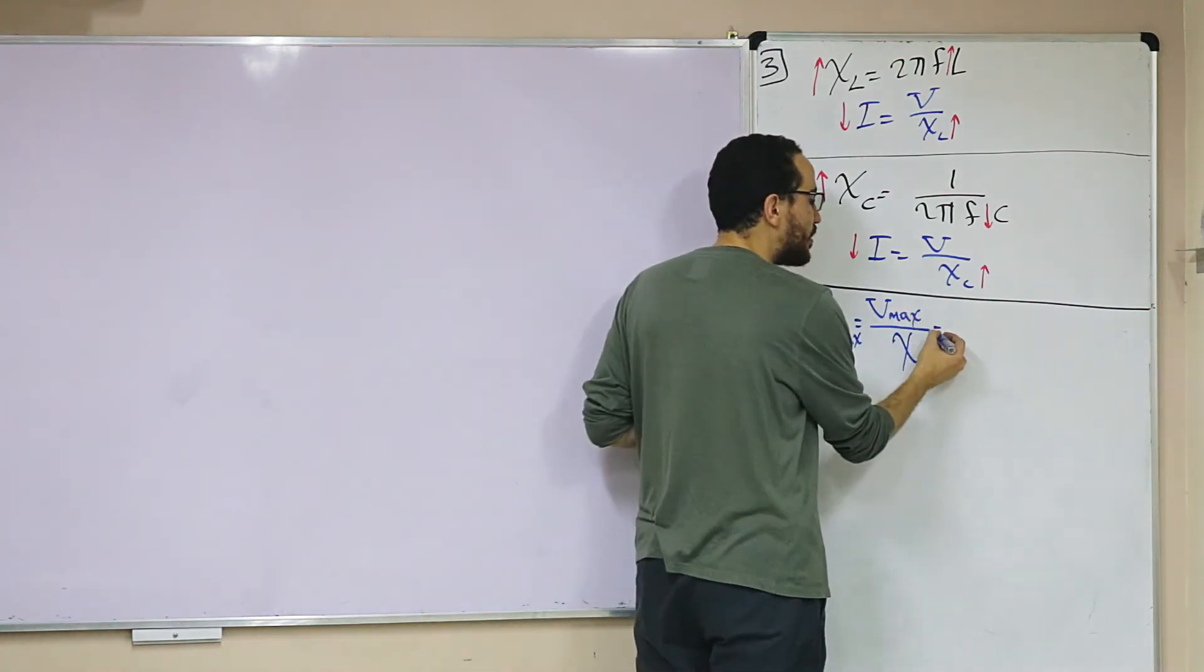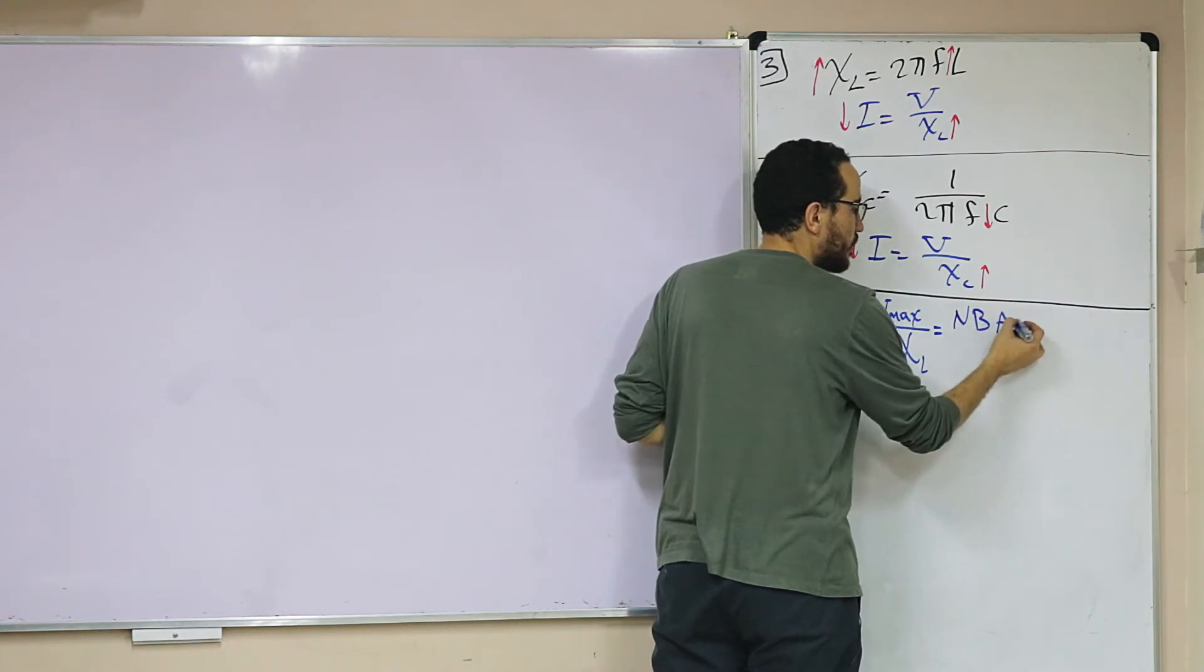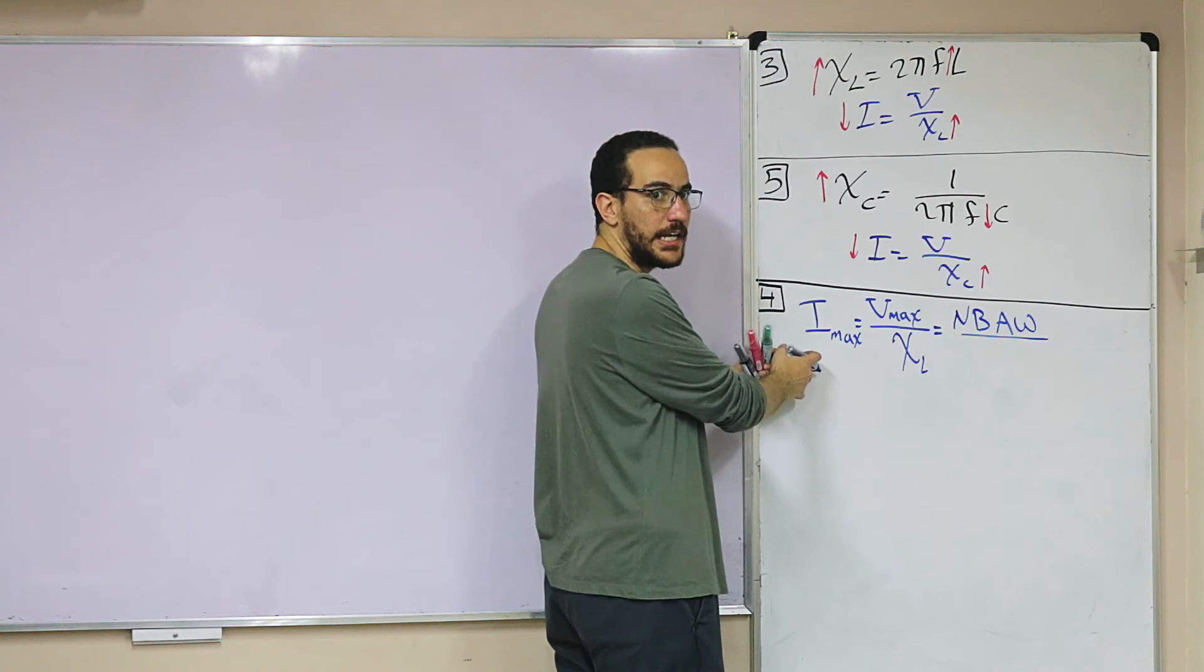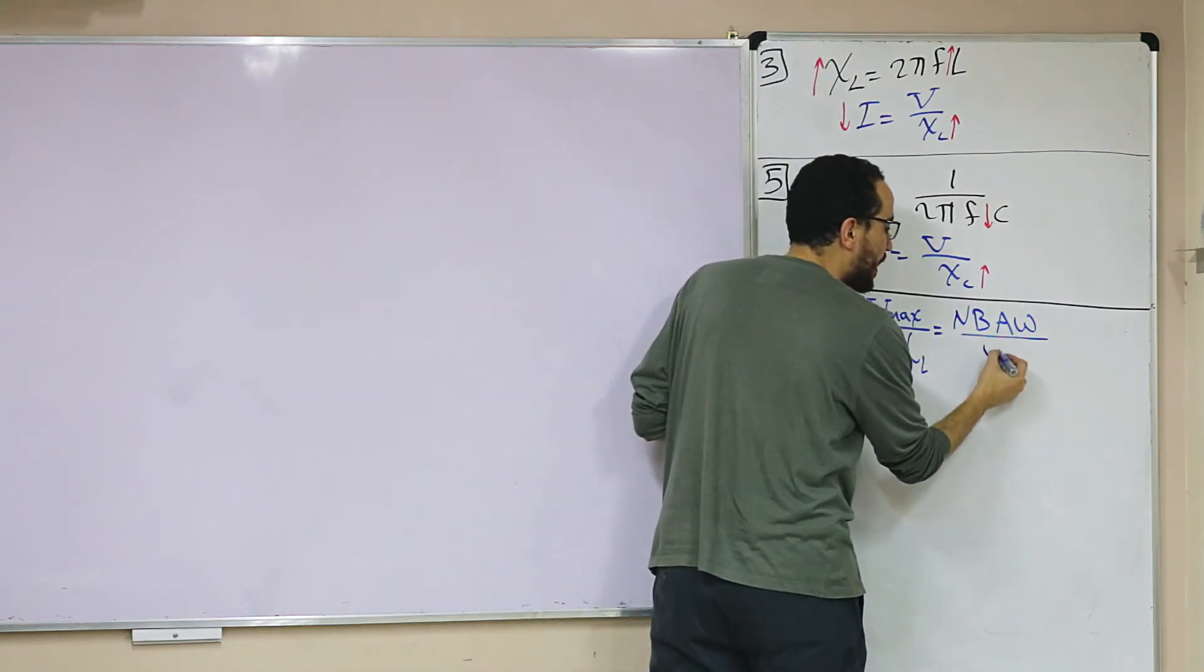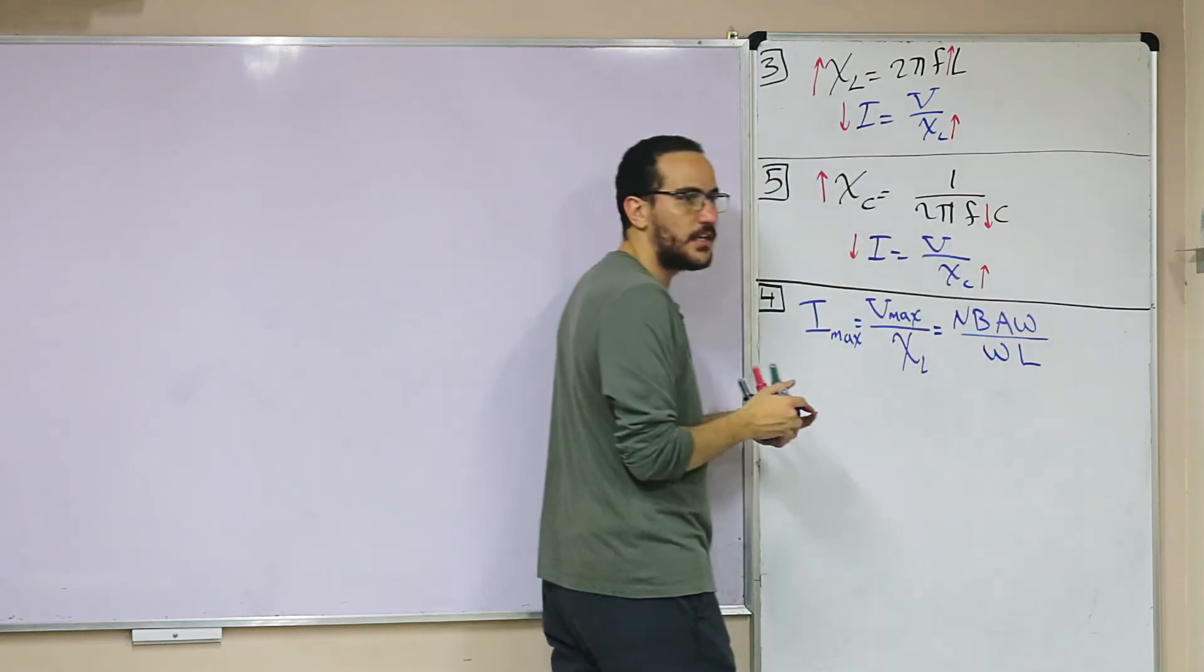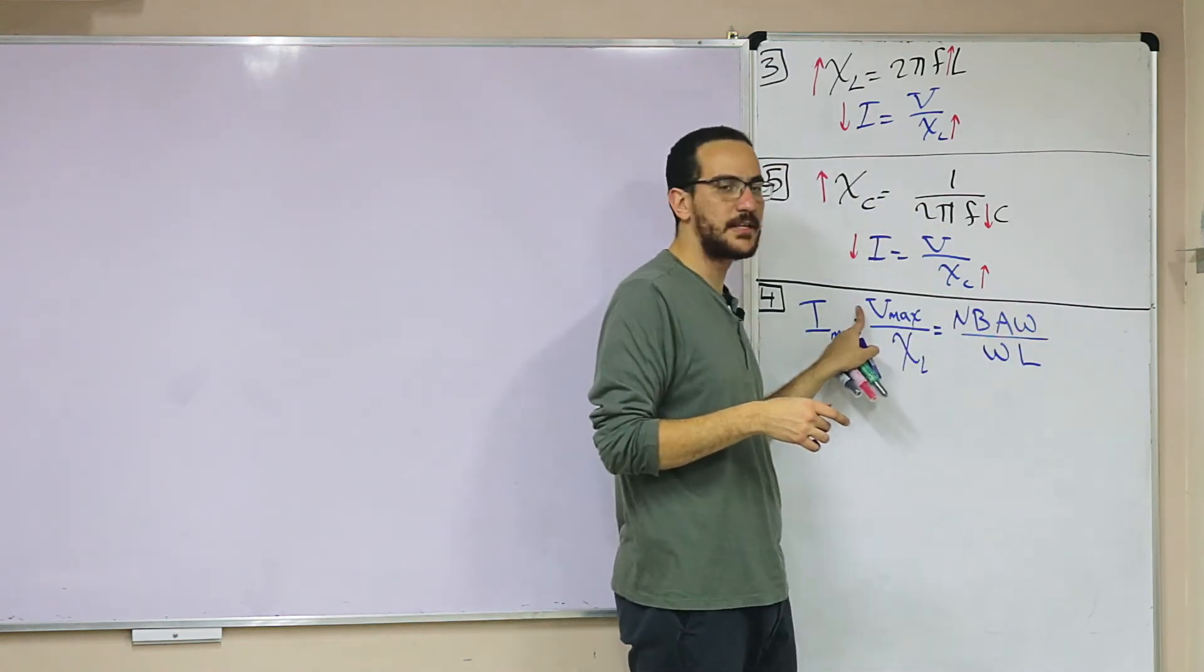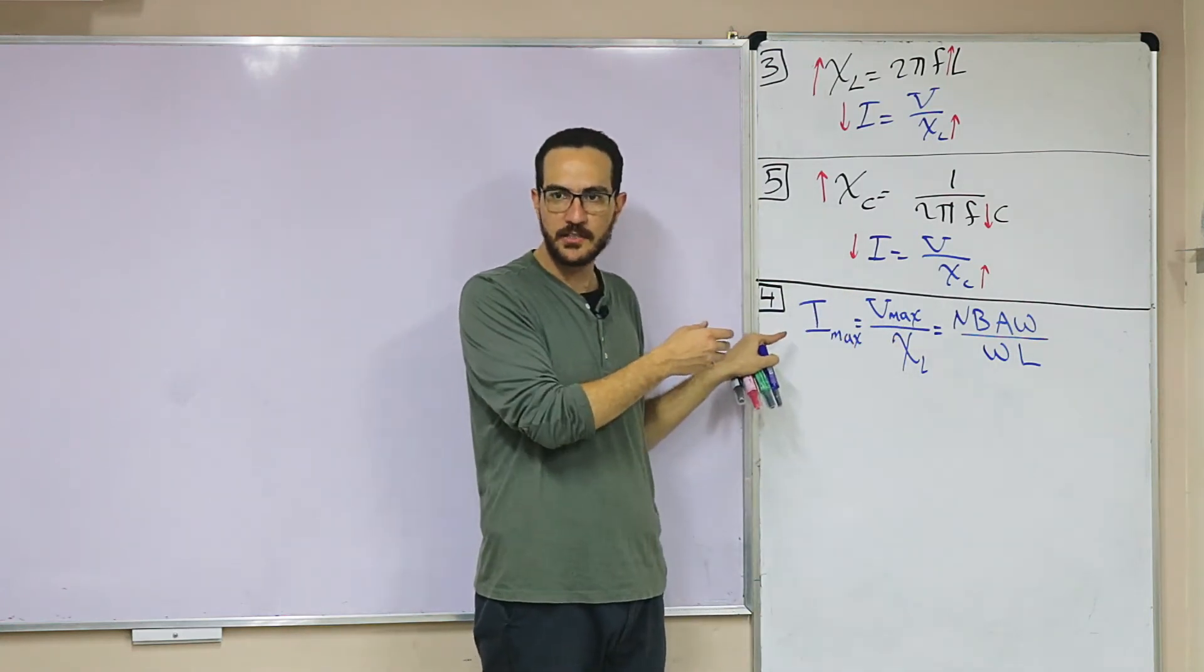When I add the speed of rotation, V maximum will increase because it is about N, B, A, omega. The current is not changed. Why? Because the XL is also increased, because it is ωL. If I add the omega, the XL will increase and V maximum will increase. If this is increased and this is increased, then they will cancel.